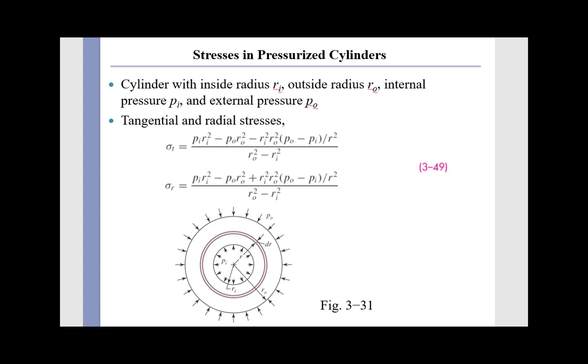In the last lecture, we talked about what it takes to calculate the stress distribution in a cylindrical pressurized cylinder. In the most general case, we have both internal and external pressures applied to the cylinder, and equations 349 allowed us to calculate the radial and hoop stresses that were associated with those pressures.